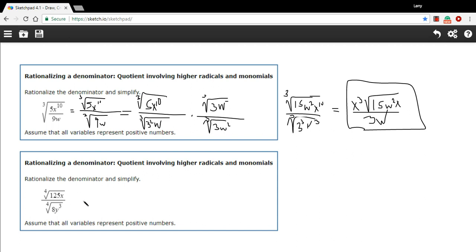And I think I'm going to start by rewriting the bottom as a power of 2. And we already have it written as a power of 5. So this is a fourth root of 8 is 2 cubed times y to the third. So I've got two third powers here.